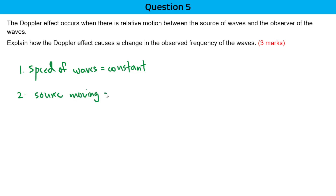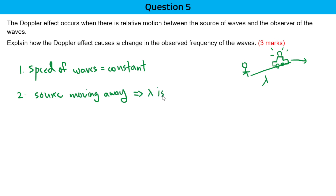An example you can relate to: you're standing here and there is a police car with a siren. If this car is moving away from you, the wavelength lambda is going to increase. When the source is moving away, lambda is going to increase. You can use the equation V equals F lambda, and since velocity is constant, frequency is inversely proportional to your wavelength.